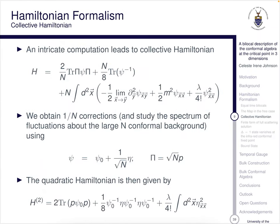Let's have a look at the collective Hamiltonian. We get the top expression for the collective Hamiltonian, then obtain 1 over N corrections and study the spectrum of fluctuations about the large N conformal background. From that we're able to get a quadratic Hamiltonian. Just notice the last term is the integral d squared vector x eta squared, which is our interaction term.